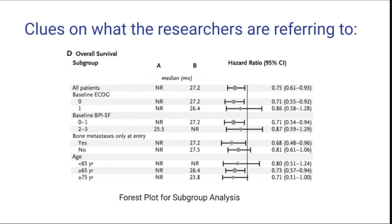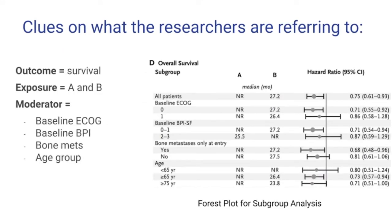This is a forest plot for subgroup analysis — I'm going to walk you through it. Let's determine the outcome: the outcome is survival. The exposure is drug A versus drug B. The moderators are the subgroups: baseline ECOG, baseline BPI, bone mets, and age group. There are three subgroups in the age category, and you can see how the hazard ratio changes depending on which subgroup it is. That means the patient's overall survival is modified by which age group they are in.